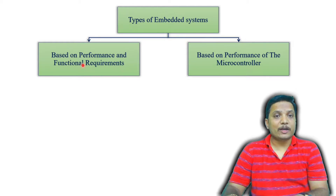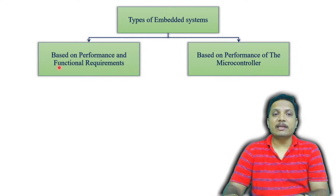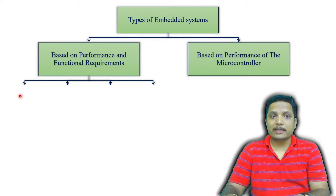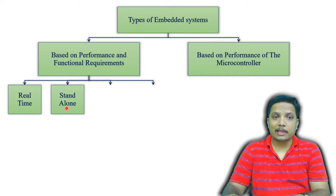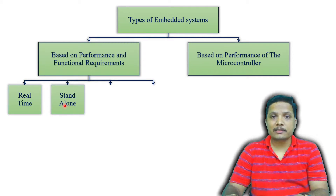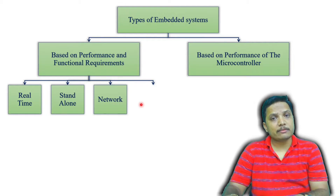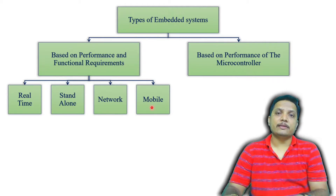When we talk about Embedded Systems based on performance and functional requirement, that is further subdivided into four categories: first is real-time embedded system, second is standalone embedded system, third is network embedded system, and fourth is mobile embedded system.